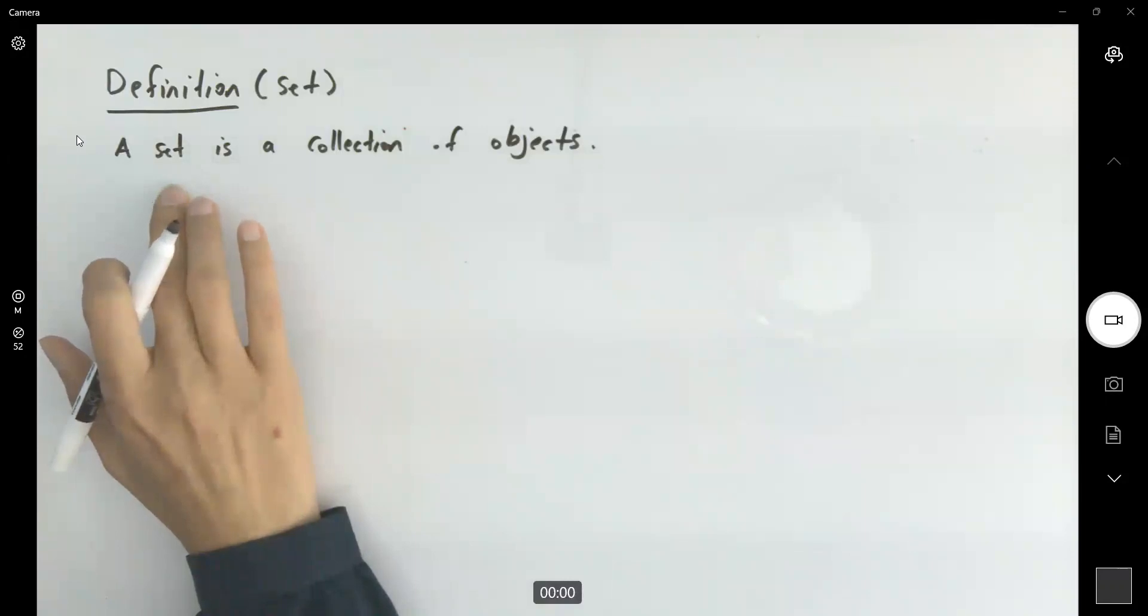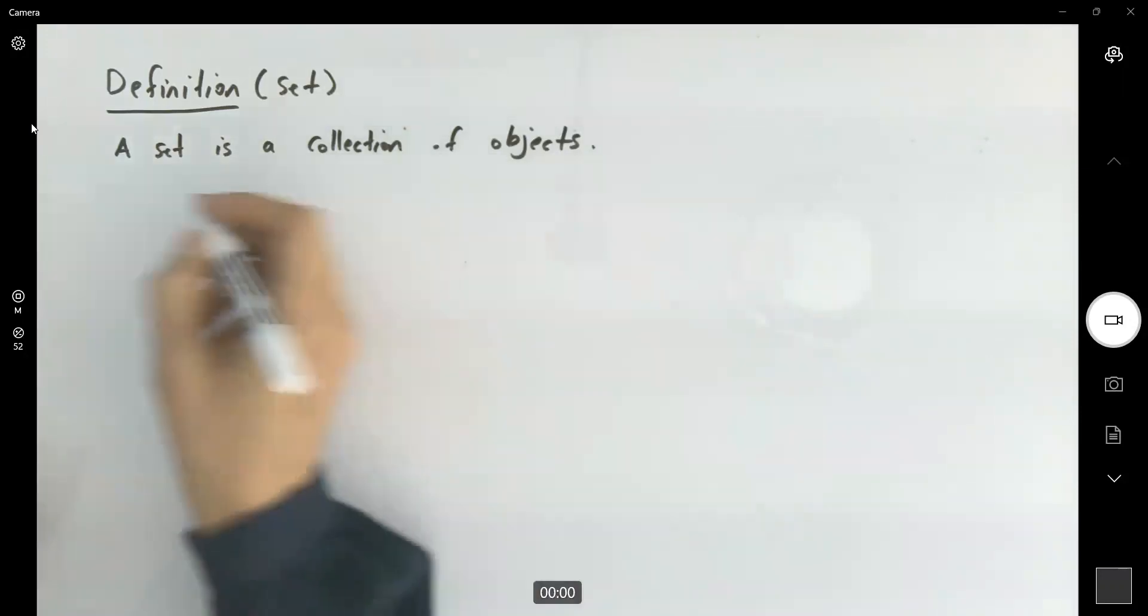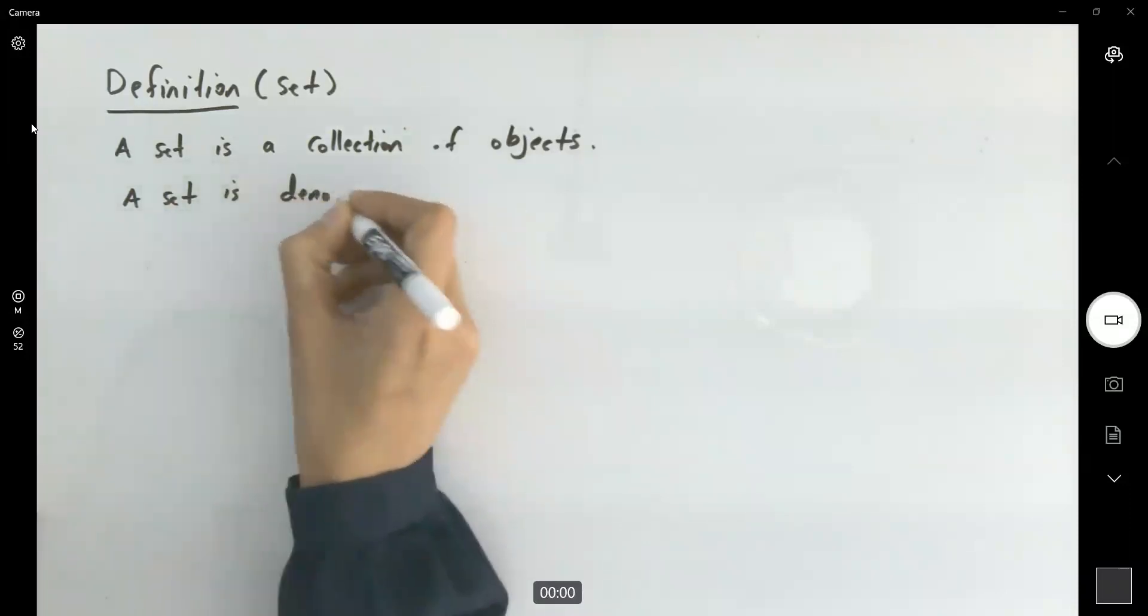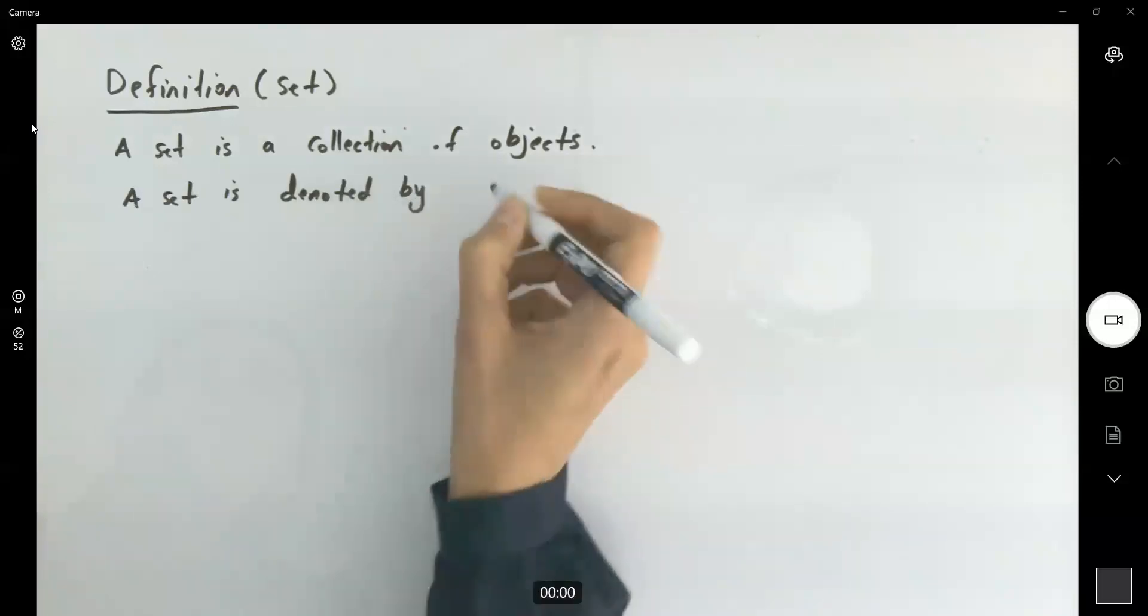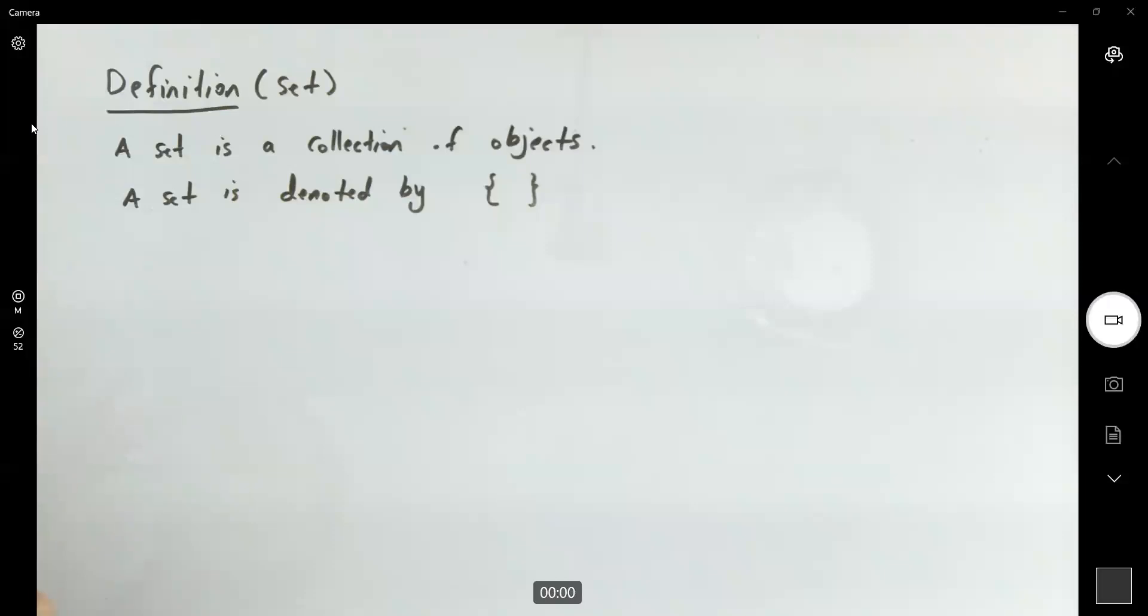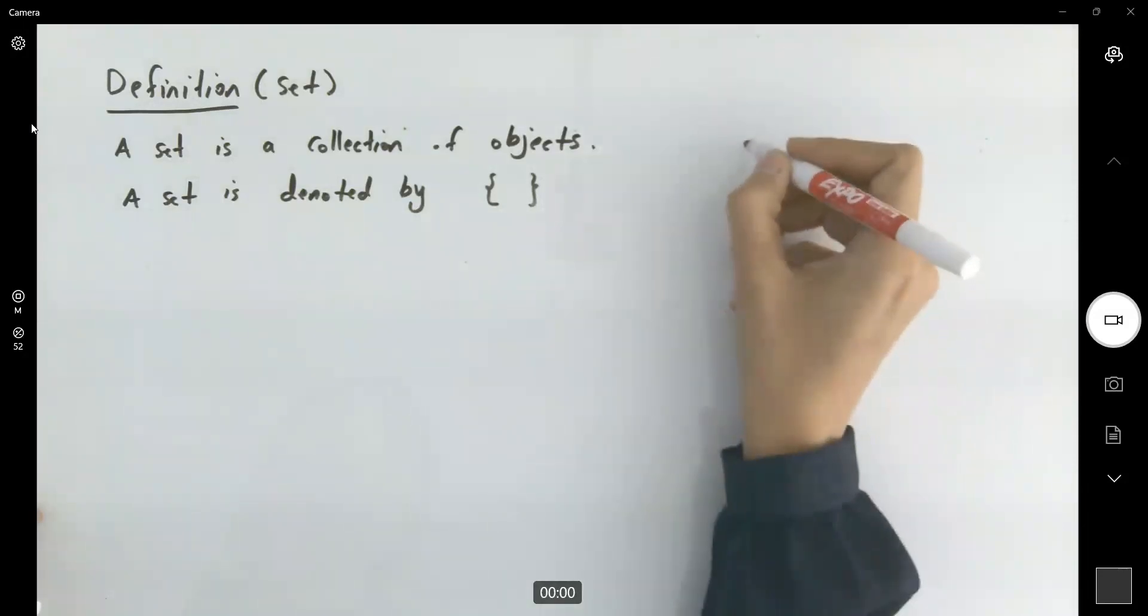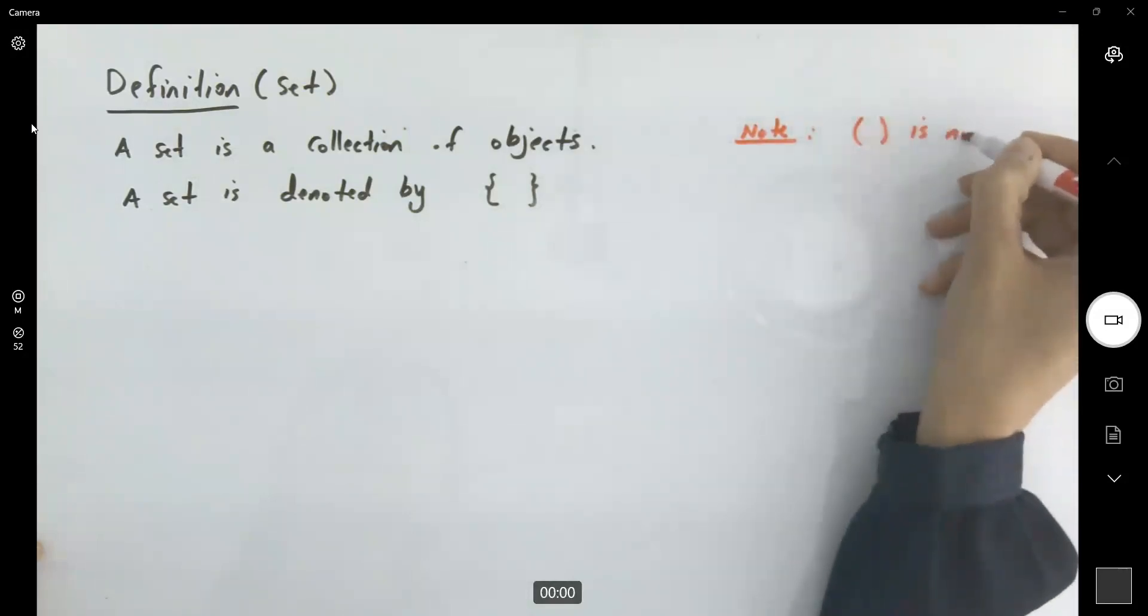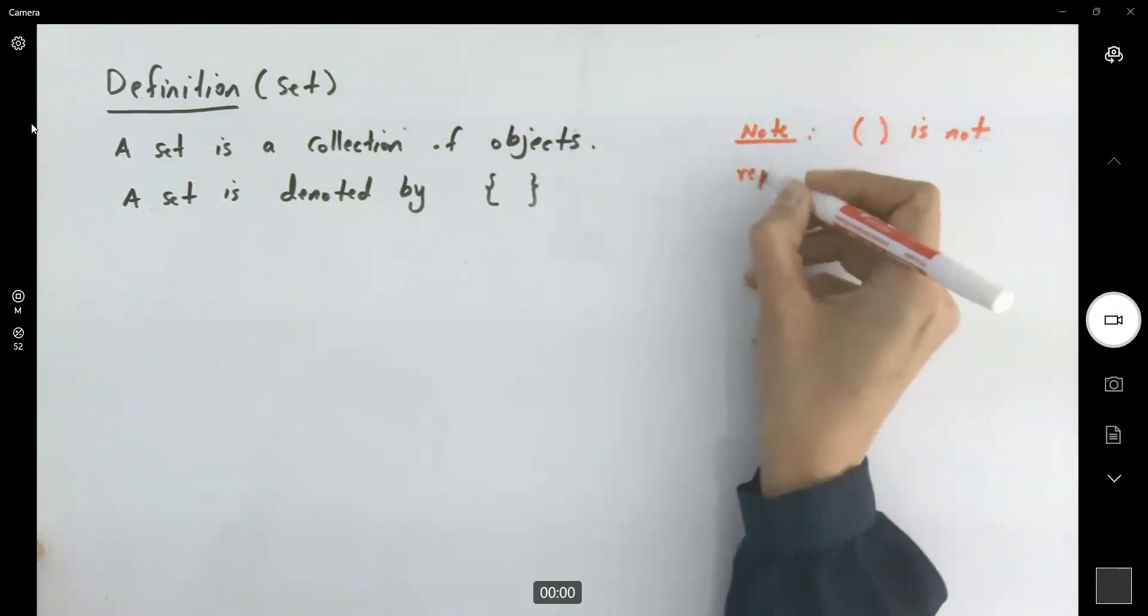But you need to describe a set using proper symbols. A set is denoted by curly brackets. It's a common mistake for students to use parentheses. Note that set of parentheses or just parentheses is not representing a set.